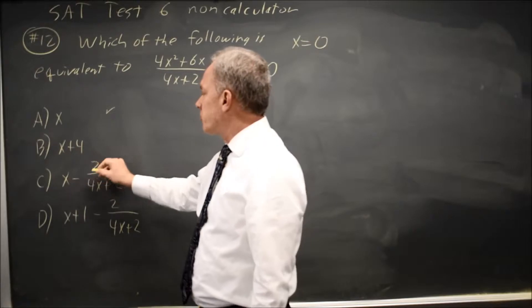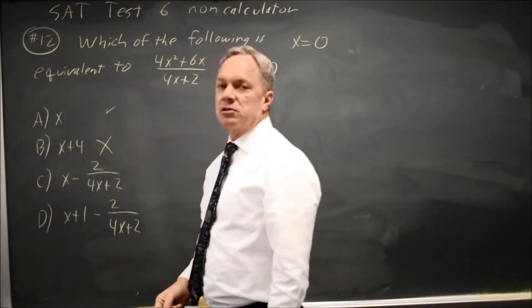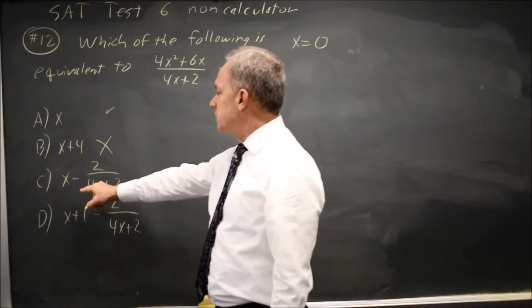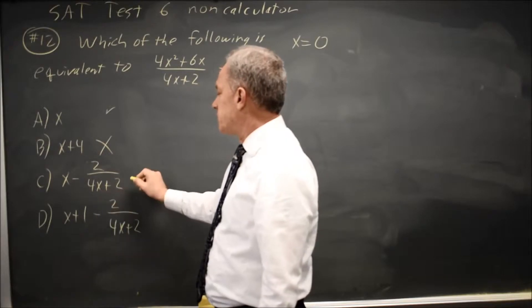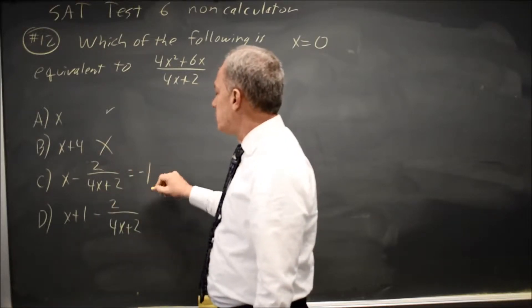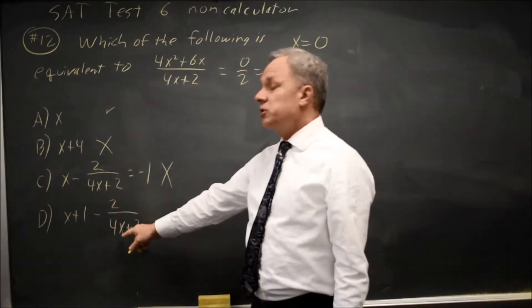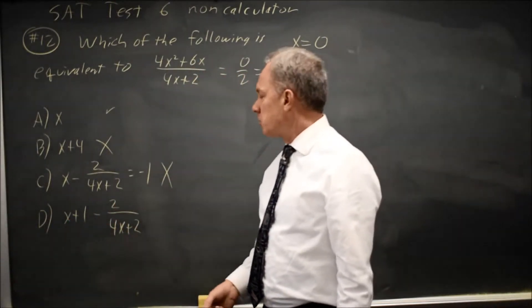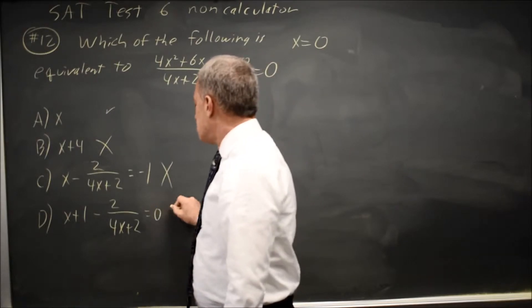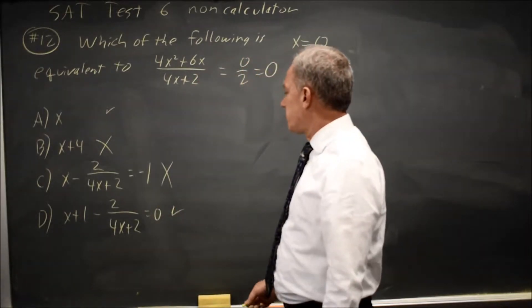Choice B is 0 plus 4 is 4, which is not 0, so choice B is wrong. Choice C is 0 minus 2 halves is 0 minus 1 equals negative 1, which is wrong. Choice D is 0 plus 1 is 1 minus 2 halves. 1 minus 1 is 0, so choice D could be correct.